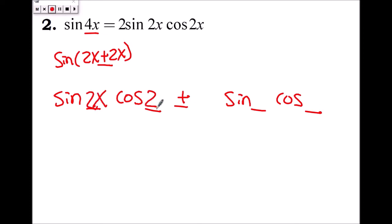So just write 2x, 2x, 2x, 2x, 2x. Okay? So sine, 2x, cosine, 2x, plus, sine, 2x, cosine, 2x is,